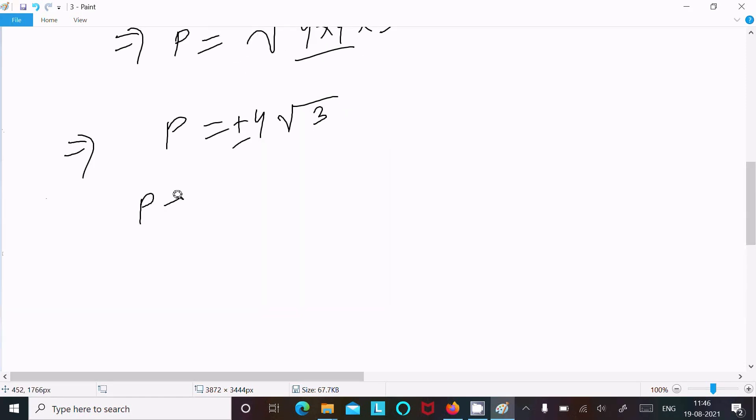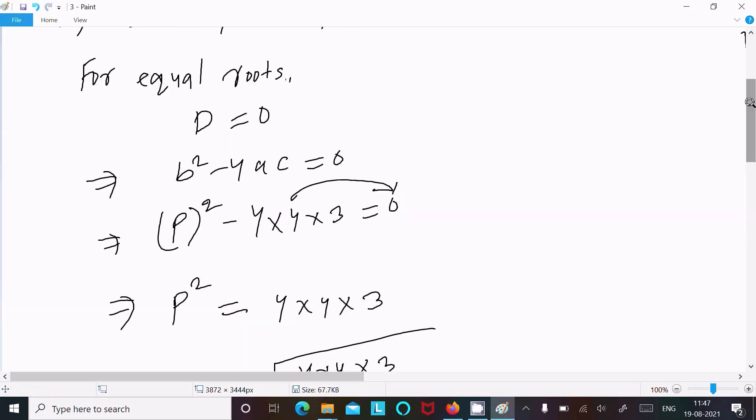So the value of p is 4√3 and -4√3. This is the value of p.